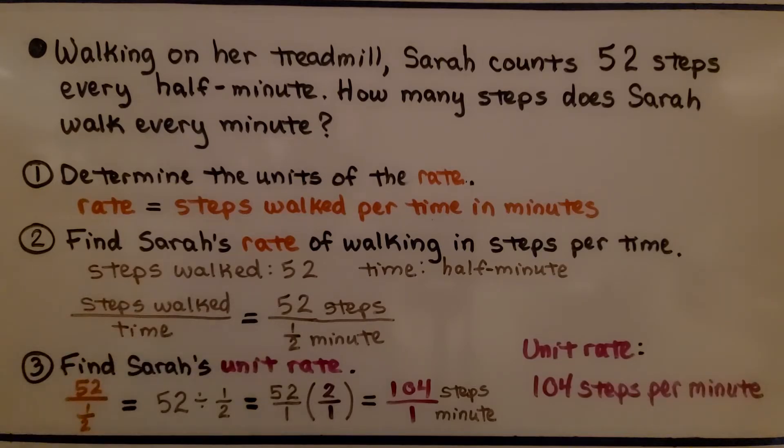We find Sarah's unit rate. We have 52 divided by one half. We can write the 52 over one and we multiply by the reciprocal of this divisor one half, so it's going to be two over one. We multiply straight across. We have 104 steps in one minute. So the unit rate is 104 steps per minute.